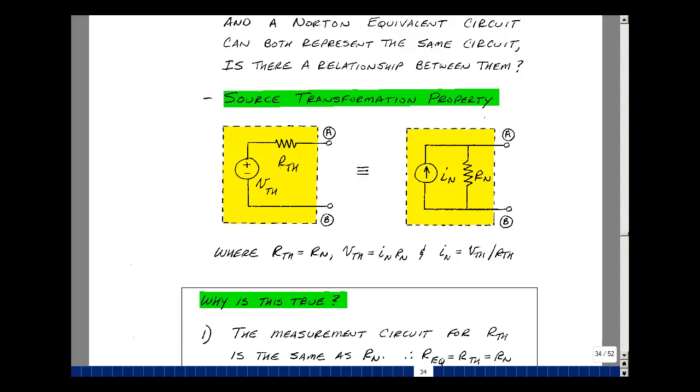It can also go the other way. You can take a current source in parallel with the resistance and express that as a voltage source in series with the resistance if you pick the resistor here to be the same as this one, and pick the voltage here to be the product of the current times the resistance. It goes in both directions.